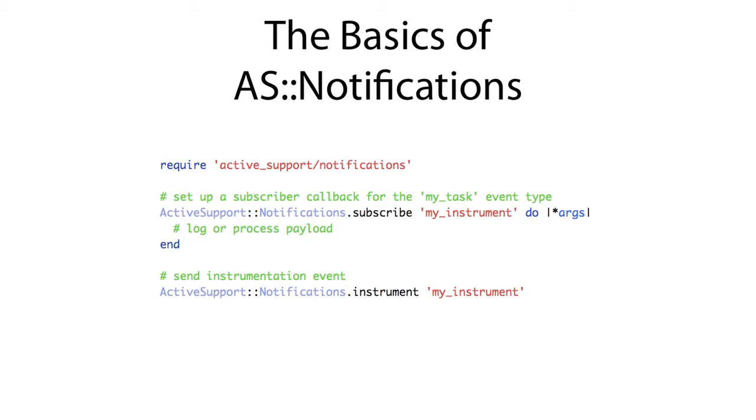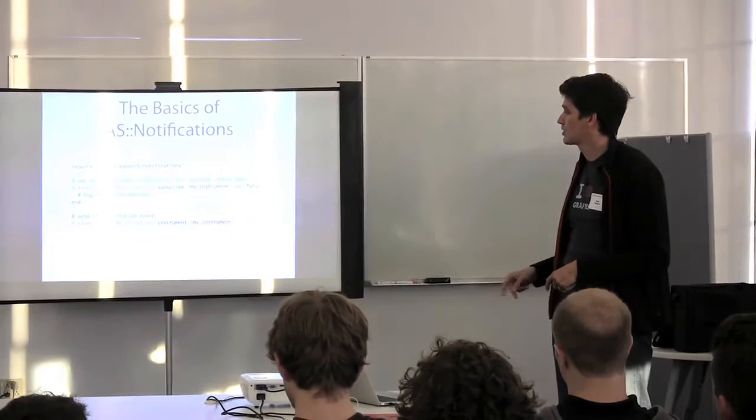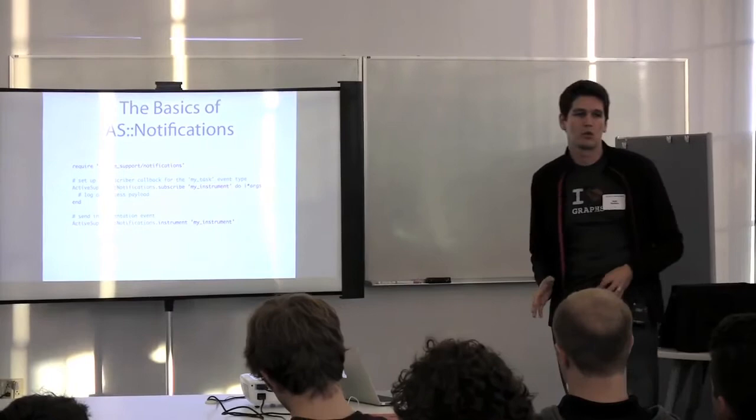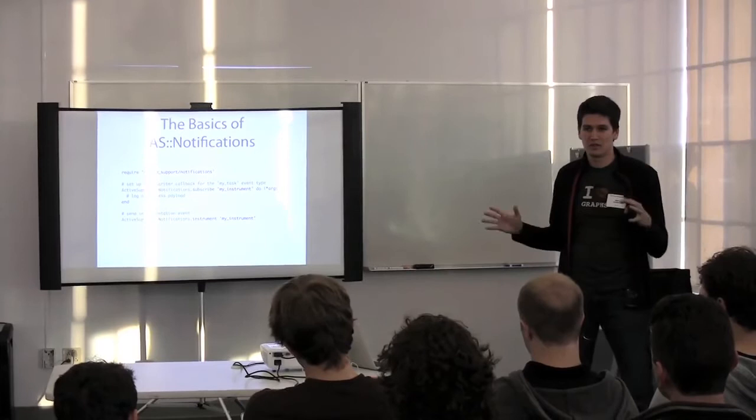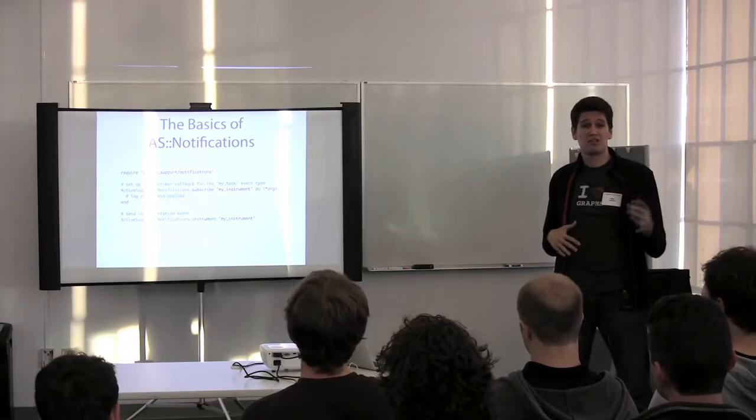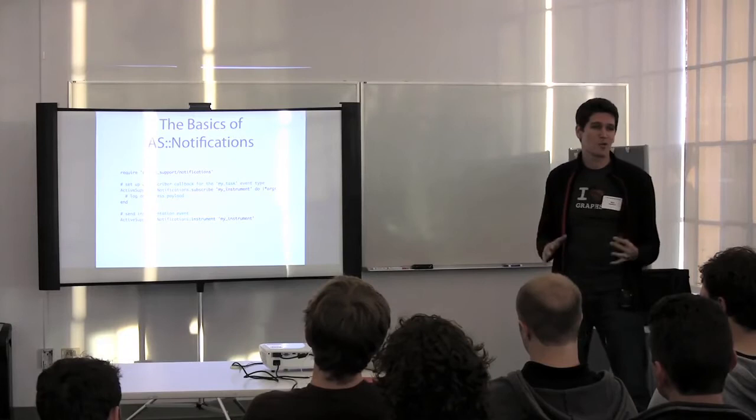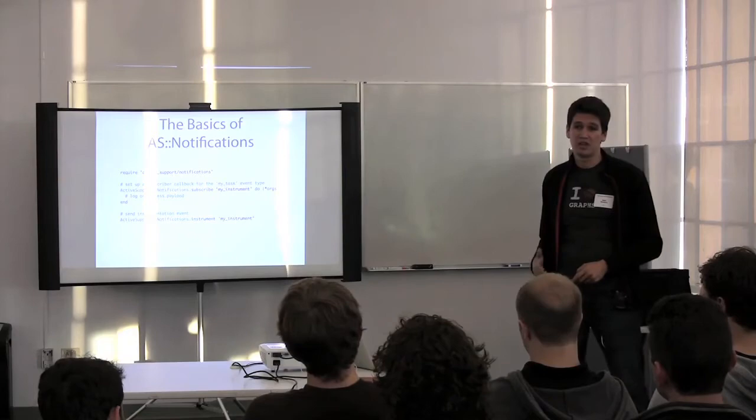What active support notifications is: it's a publish subscriber system built into Rails. There's two core concepts: subscribers and instrumentation. Subscribers say I'm interested in any message that gets sent through the system with a certain message name. You set those up in advance, and whenever you send an instrumentation event with that message name, any subscribers that signed up get the payload from those instrumentation events.